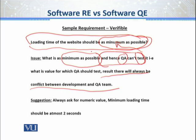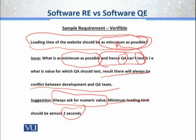The issue is the open-ended interpretation of 'as minimum as possible.' The best suggestion is to always ask for a numeric value — don't rely on textual interpretation. Don't leave things open-ended. For example, you should have committed with the client that the minimum loading time should be at most 2 seconds. Now 2 seconds is a benchmark — both the developer and the QA department have a clear target.